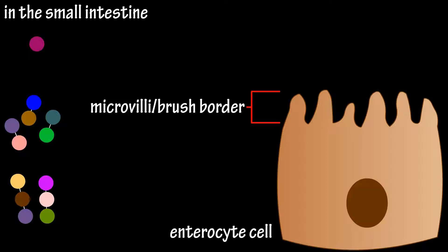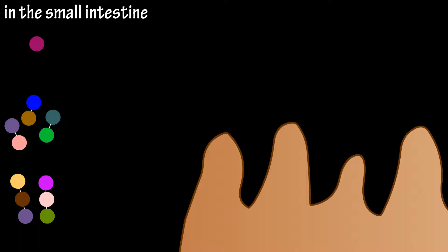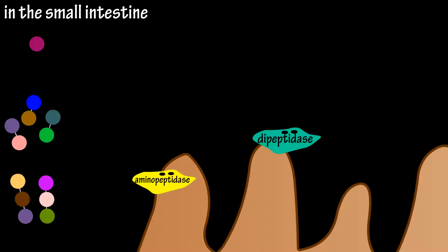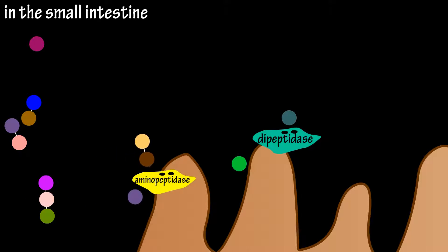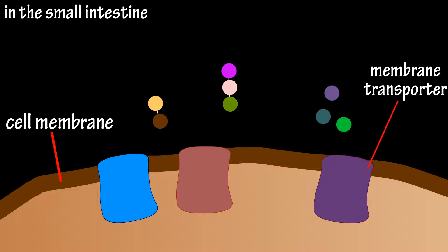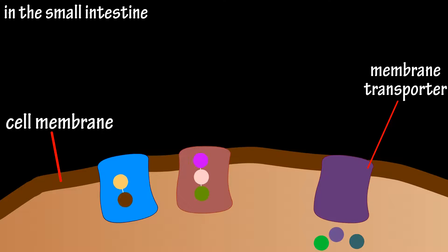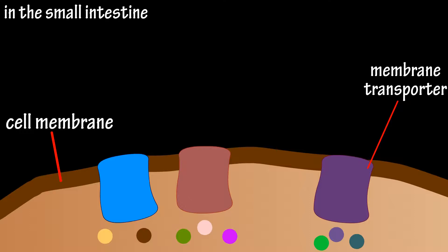The brush border, or microvilli — tiny hair-like projections located on the enterocyte cells of the small intestine — also contain enzymes that finish the breakdown process. The brush border enzyme dipeptidase breaks the bond between dipeptides, and aminopeptidase acts on a specific end of a fragment, releasing one amino acid at a time. Free amino acids are then absorbed into the enterocyte cells through membrane transporters within the membranes of the cells. Some di- and tripeptides are also absorbed into the enterocyte cells through specific membrane transporters, where they are then broken down into free amino acids.